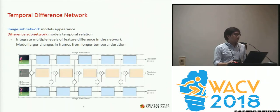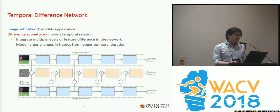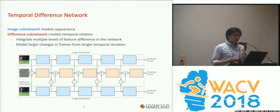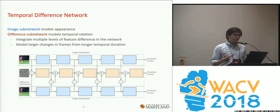Our proposed Temporal Difference Network consists of two sub-networks. The image sub-network models the appearance, like a typical CNN, and the difference sub-network models the temporal relation between frames. It integrates multiple levels of feature difference in the network, from the input RGB difference to the intermediate difference of CNN features. By modeling the higher-level features, the model can capture larger changes in the frames from longer temporal duration, so instead of just looking at consecutive frames, we can look at frames that are further apart.